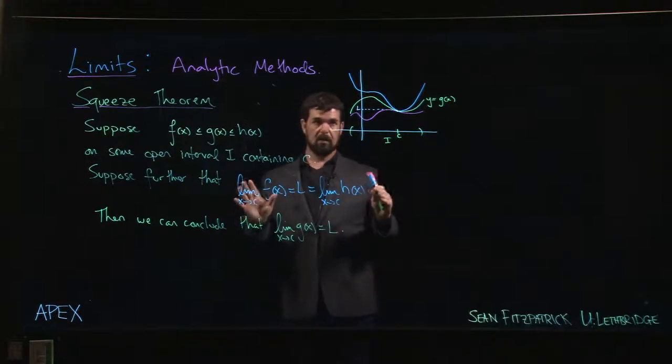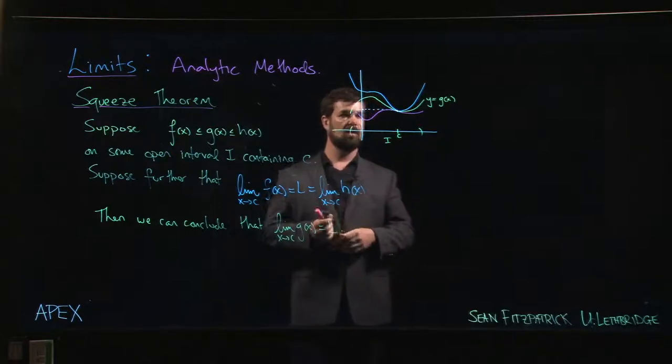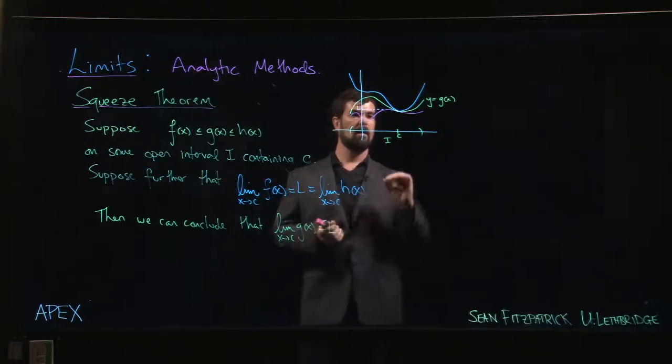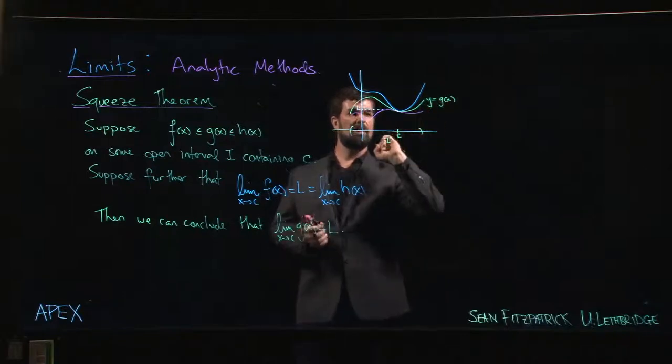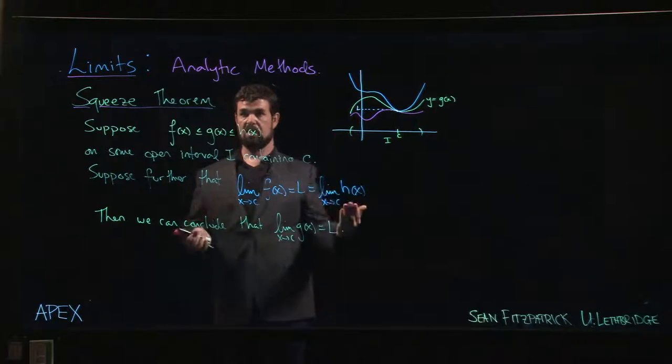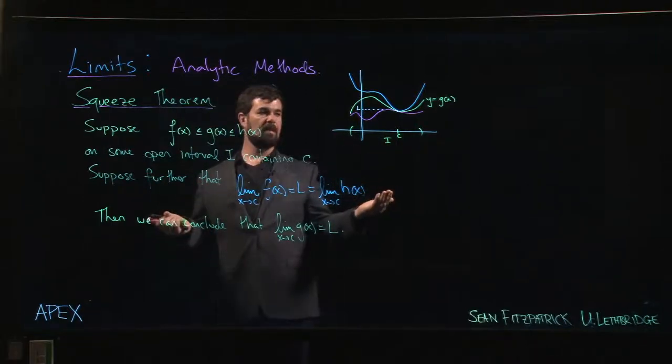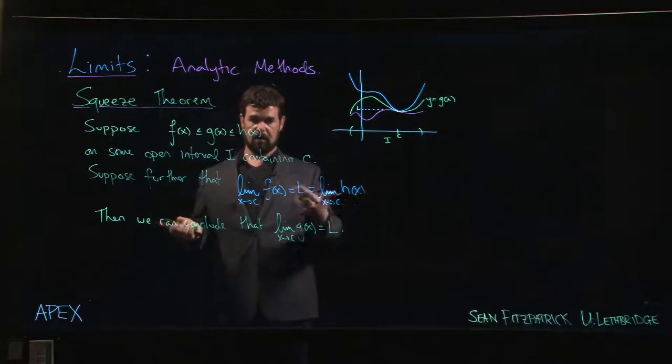Applying the squeeze theorem can be a little bit tricky because usually what happens in practice is you're dealing with a situation where you're interested in proving that this function g of x, the one in the middle, has a particular limit at that point. And you don't have enough information to conclude immediately that your function has the limit that you're interested in.